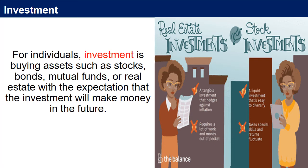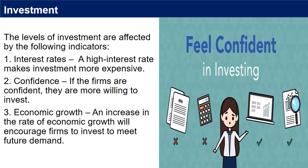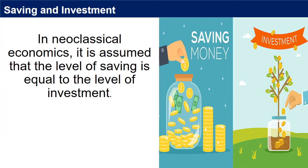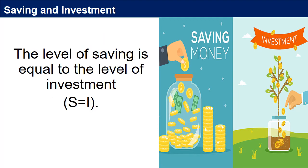Investment can also involve spending on human capital, such as investment in training and education. In neoclassical economics, it is assumed that the level of saving is equal to the level of investment. This is because investment is determined by available savings in the economy. If there is an increase in savings, then banks can lend more to firms to finance investment projects. In a simple economic model, we can say the level of saving is equal to the level of investment: S is equal to I.